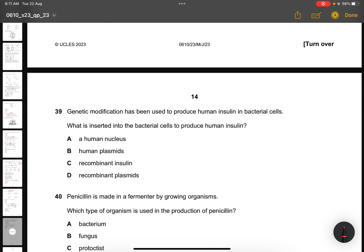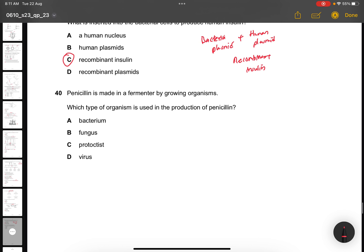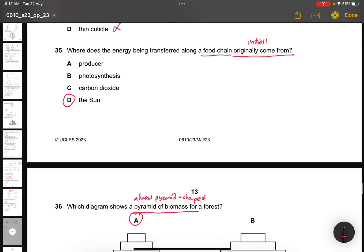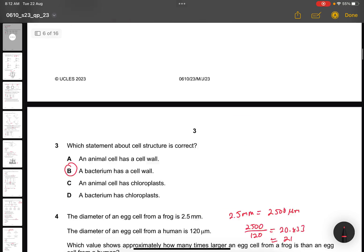Question 39. Genetic modification has been used to produce human insulin in bacterial cells. What is inserted into the bacterial cell to produce human insulin? A recombinant insulin. Because a recombinant is containing the bacteria plasmid plus the human plasmid. But when it's recombined, it will be as a recombinant insulin already. Question 40, last question. Penicillin is made in a fermenter by growing organisms. Which type of organism is used in the production of penicillin? Technically, what is penicillin? Penicillin is coming from a fungus. So that's all for this paper. I hope you understand everything and hope to see you guys in the next video. Bye-bye.